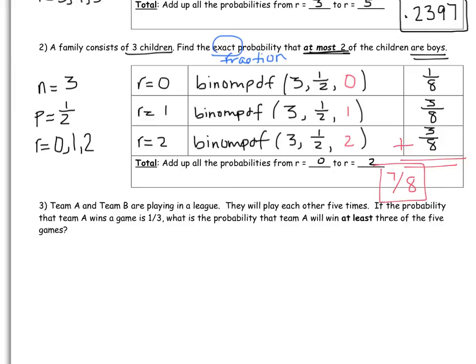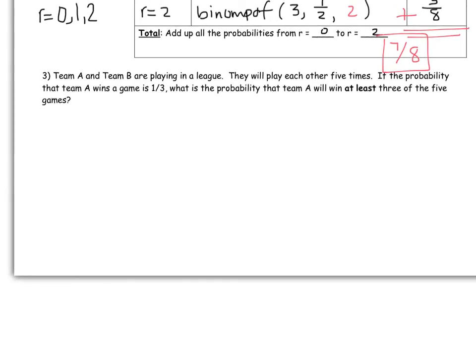Last example. Notice in example number 3, I don't have a table for you. The table was there to set you up. So now that you know what to do for each problem, on the regents, they're not going to give you a table. So let's read what the problem says. Team A and B are playing in a league. They will play each other 5 times. If the probability that Team A wins a game is 1 third, what is the probability that Team A will win at least 3 of the 5 games? Since the problem doesn't specify how to round if I should leave it as a fraction or a decimal, let's do both.